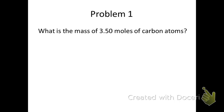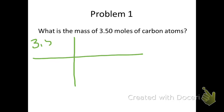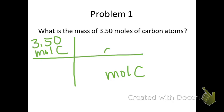Now you are ready to set up problem number 1. Make your t-chart and put the given, including units, in the top left box. Note that moles is the unit of the given, so you must put mole in the bottom right box. This forces you to place 1 mole in the bottom and 12 grams of carbon on the top. Multiply the numbers in the top boxes and divide by the numbers in the bottom. You should be able to cross out the mole units and calculate your answer to be 42 grams of carbon.